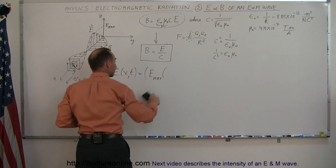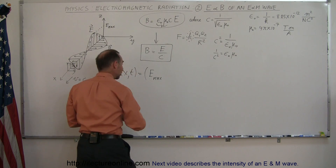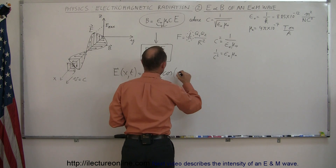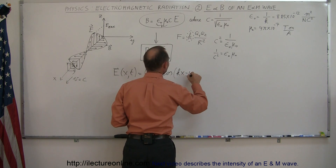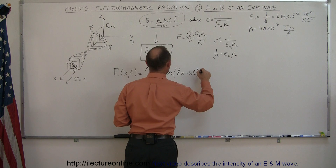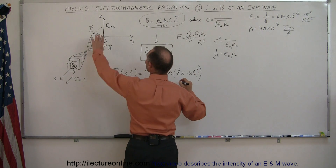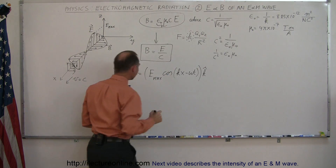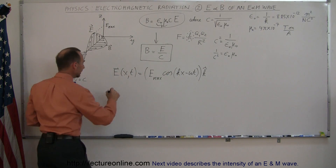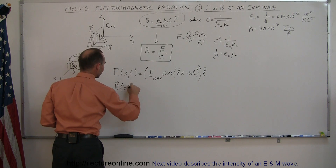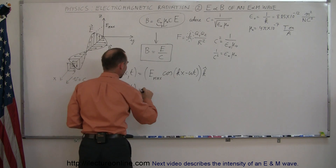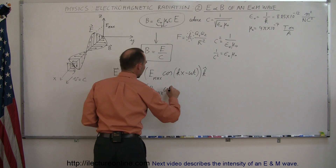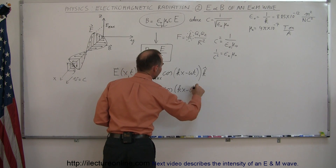The electric field equation is e-max times the cosine of (kx minus omega-t), multiplied by the unit vector in the z direction, which would be k-hat. The magnetic field oscillations, also a function of position and time, equal b-max times the cosine of (kx minus omega-t).